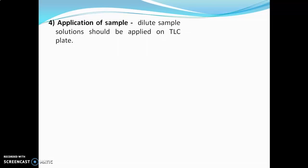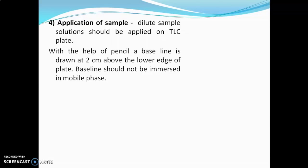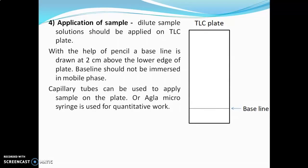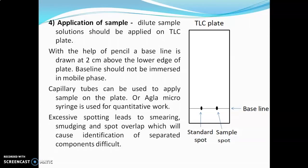The next step is application of sample. Dilute sample solutions should be applied on the TLC plate, as highly concentrated solutions will cause spots to spread or have a tailing effect. With a pencil, a baseline should be drawn 2 cm above the lower edge of the plate. The baseline should not be immersed in the mobile phase while developing. A capillary tube or a micro syringe can be used to apply the sample. If two spots are applied, the distance between them should be 2 cm. Excessive spotting will lead to smearing, smudging, or spot overlap, causing difficulty in identification.